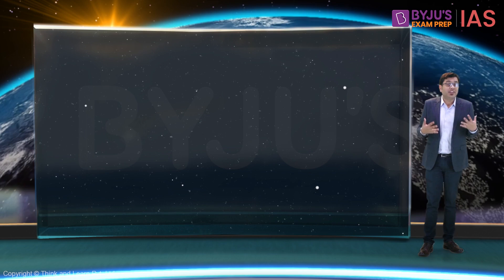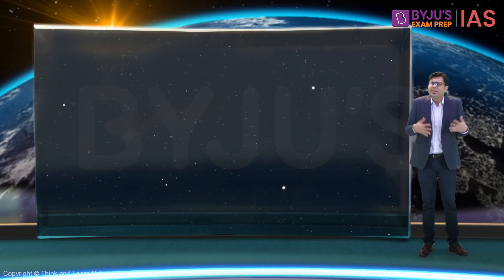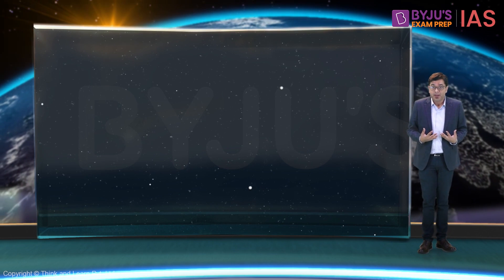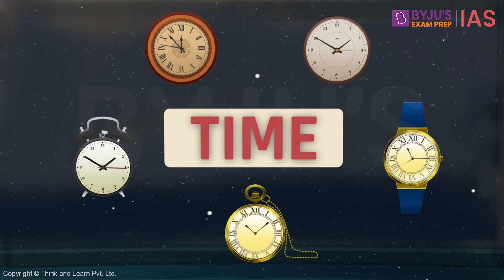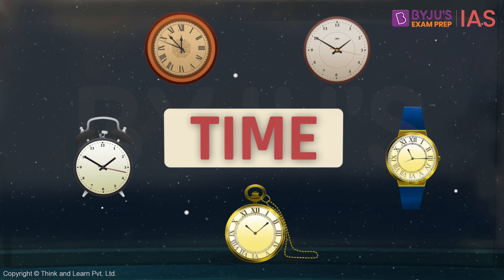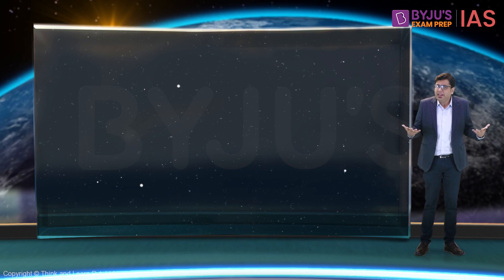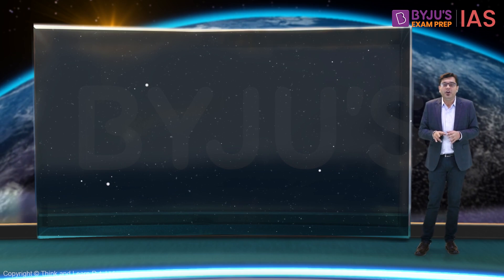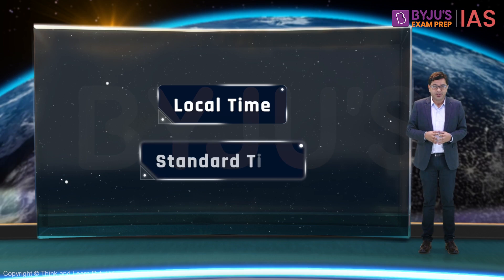We know that longitudes help us in finding locations of places. There's another way in which longitudes are helpful to us — they help us in tracking time. We already have clocks and watches for keeping track of time, so how do longitudes help us? For that we need to learn two concepts: the concept of local time and standard time.